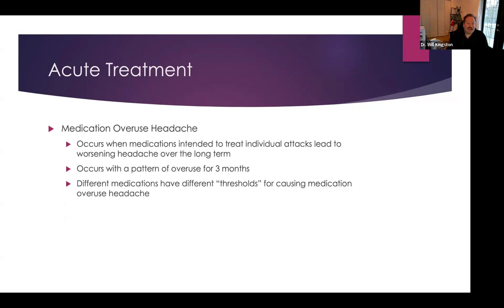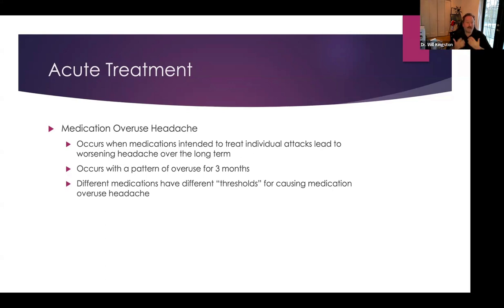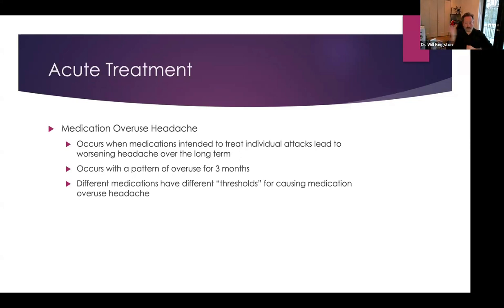Medication overuse occurs when a medication intended to treat an individual attack leads to worsening headache over time. Generally speaking, it occurs with a pattern of overuse lasting about three months. Different medications have different thresholds for causing medication overuse headache. Typical over-the-counter pain-relieving medications often can lead to medication overuse with about 15 days of use per month, whereas some other treatments are more like 10 days a month. These are guidelines—we don't punish people for having a bad month here and there; it really is about a pattern. And really, if someone is needing to treat an individual attack that often, that is also a symptom of a poorly treated disorder that needs more attention from a preventative standpoint.